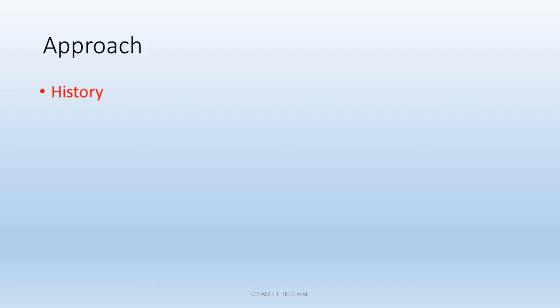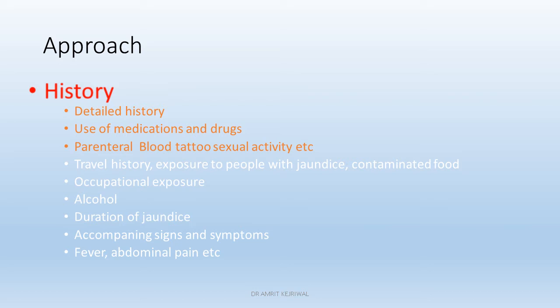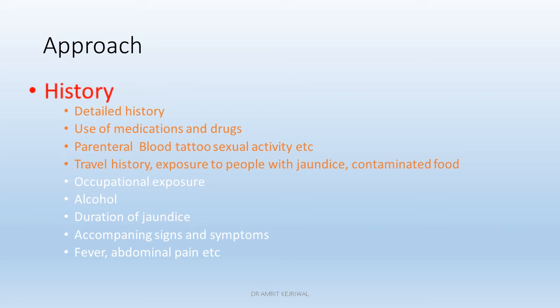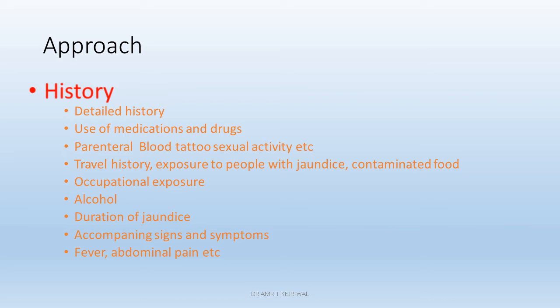Coming to the approach towards the patient — first, take a detailed history. Ask about use of medications and drugs, which are a very common cause of hyperbilirubinemia. Ask about parenteral blood transfusion, tattoos, or sexual activity. Inquire about travel history or exposure to people with jaundice, contaminated food, occupational exposure (commonly seen in medical professionals), alcohol consumption, duration of jaundice, and accompanying signs and symptoms such as fever and abdominal pain.